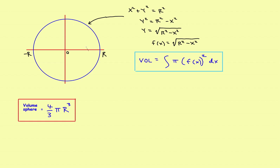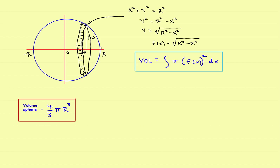Inside this sphere, think of individual rectangles. One rectangle goes up to f of x, across, and back down — so its height is f of x and its thickness is dx. If you take that rectangle and rotate it around the axis, it sweeps out a disk, just like in the previous video. Adding up all such disks gives you the volume, which is why the formula involves pi times f of x squared.